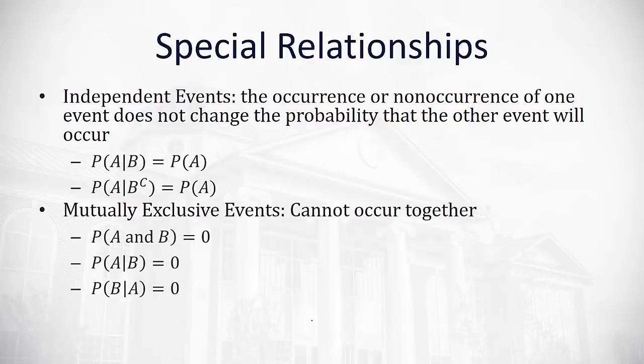The other special relationship is mutually exclusive events — events that cannot occur at the same time. For example, I cannot be in my car and riding my bicycle simultaneously. So the probability of both A and B occurring is 0, and the probability of one given the other occurred is also 0, because if one occurred, the other cannot.